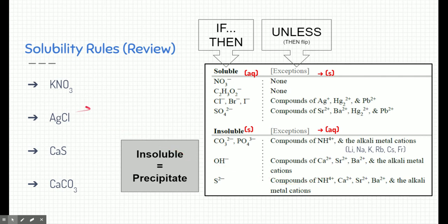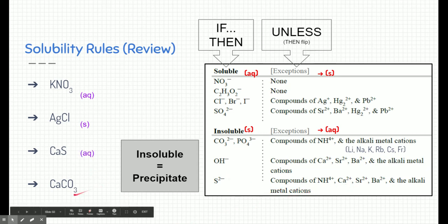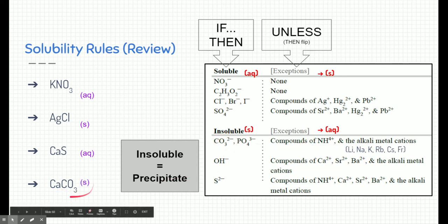Let's apply the solubility rules to some products. If we formed potassium nitrate, nitrate is soluble and there's no exception, so we write AQ. For silver chloride, chlorine is soluble, but it's attached to silver, which is an exception — so it flips to insoluble. For calcium sulfide, sulfur is insoluble, but calcium is an exception, making it aqueous. For calcium carbonate, carbonate is insoluble and calcium is not an exception, so this product is a precipitate.